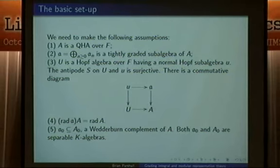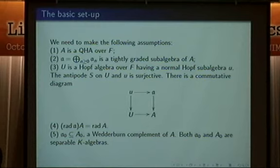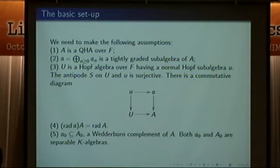So the next couple of slides are just a list of conditions that are required. A is quasi-hereditary over the field. You've got this tightly graded subalgebra. And also, because we're eventually going to bring in quantum groups, there are a couple of Hopf algebras around which map onto little a and big A. Again, we make this condition that the radical of little a generates the radical of big A.